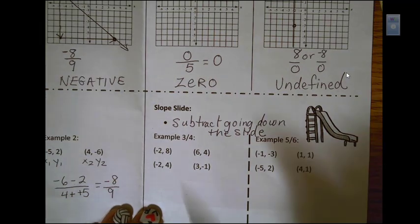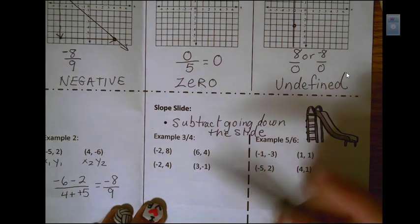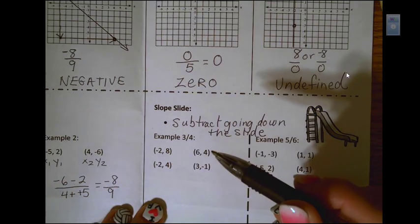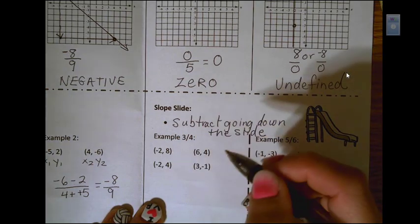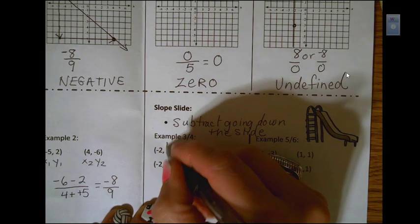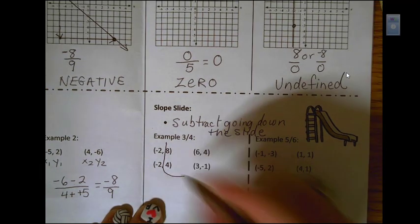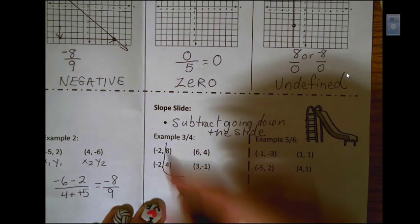So here's an example. Two points and we're trying to find the slope. So what you do is you put them right on top of each other and you make this slide. Now you have to remember that you're subtracting.